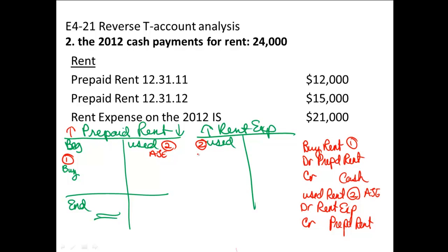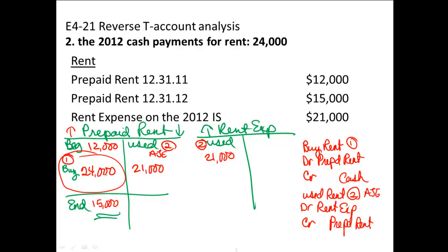According to the facts, prepaid rent at the beginning of the period was $12,000, prepaid rent at the end of the period was $15,000, and rent expense was $21,000. So the question is: how much did you pay in cash for rent during the period? We know how much rent expense was, but how much cash did you pay — not how much rent did you use? Working backwards: $15,000 is the ending balance; reverse sign, add $21,000; reverse sign, subtract $12,000. I find that I paid rent of $24,000 that year. Proof: $12,000 plus $24,000 minus $21,000 equals $15,000 ending balance.